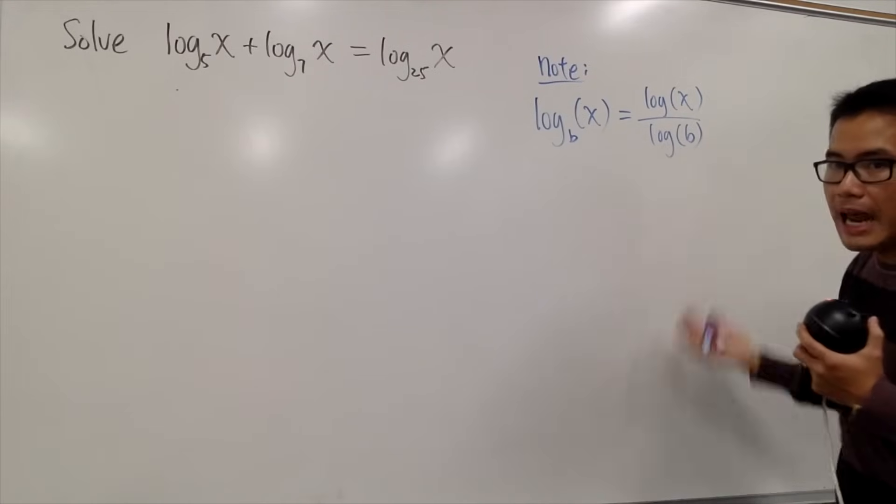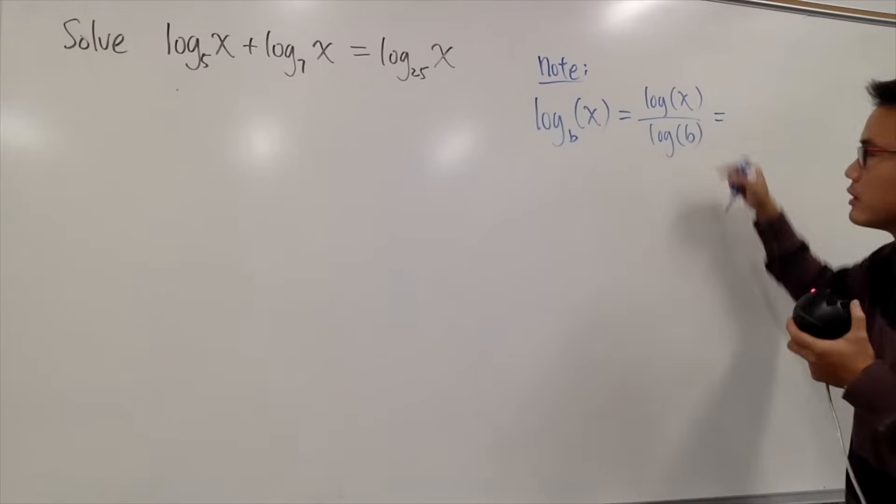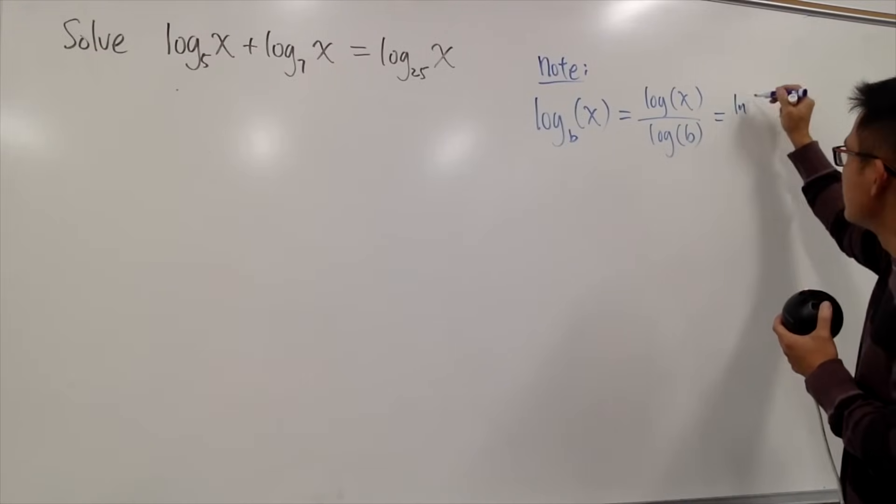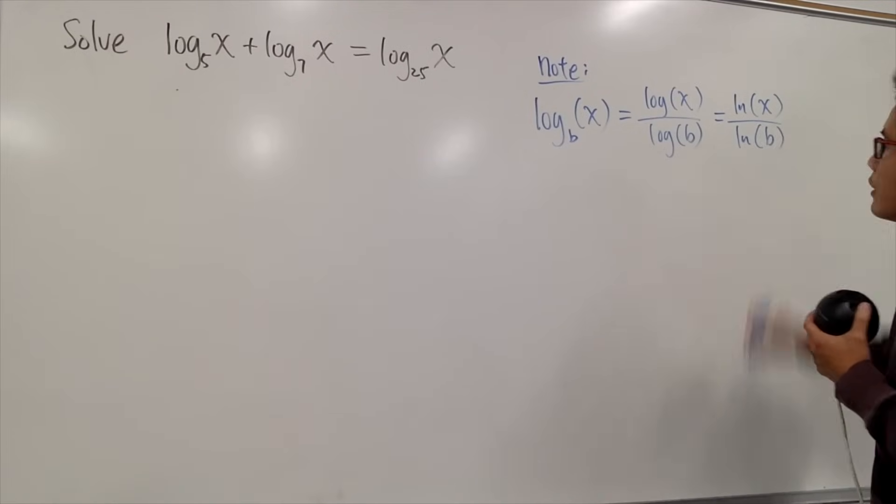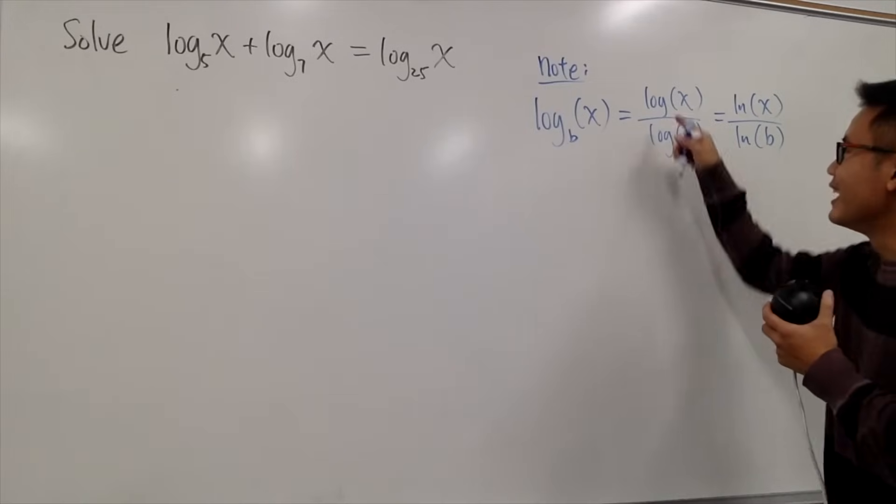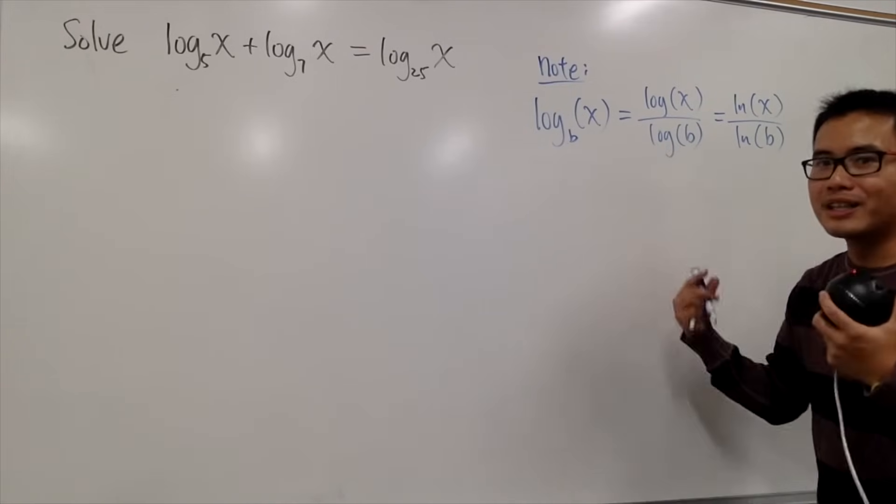As long as these two are the same, it's okay. If you would like, you can also take the natural log. So you can also do this as the natural log of x over the natural log of b. You can also do it with log base 3 of x over log base 3 of b. But why bother with that?